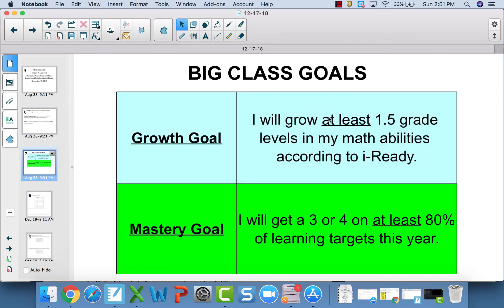iReady will be taken at the end of the year. We need at least a year and a half growth, and our mastery goal is to get at least 80% on our sticker chart.